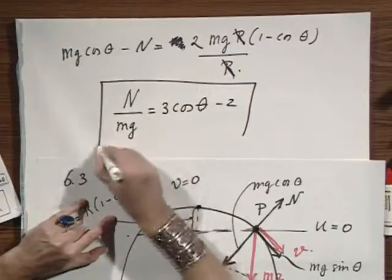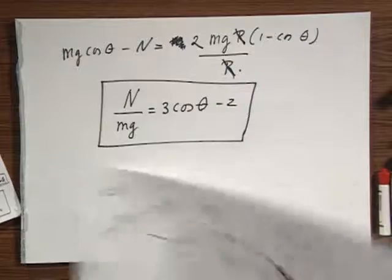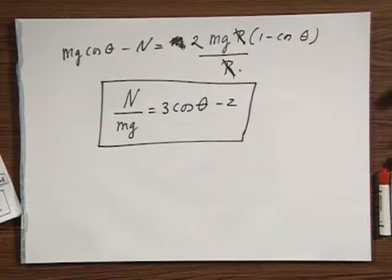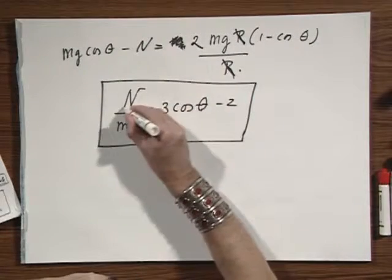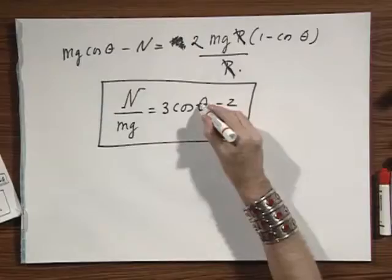And if I work this out, then I find N divided by Mg equals three cosine theta minus two. And so what I have derived here is by combining these two key equations, I have derived here an equation which tells me what the normal force is, the force that the girl feels pushing vertically, radially outwards when she's sitting on the igloo as a function of theta.